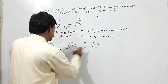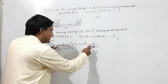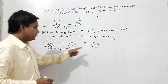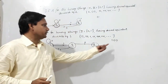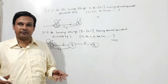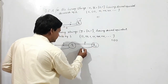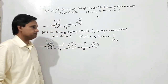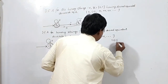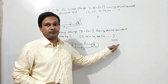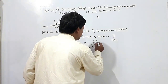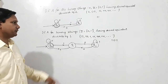Both transitions at 0 and 1 from Q1 are now shown. Now for Q2: arriving at Q2 via string '10'. For input 0, the string '100' has decimal equivalent 4. Dividing 4 by 3 gives remainder 1, so the transition goes from Q2 to Q1. For input 1, the string '101' has decimal equivalent 5. Dividing 5 by 3 gives remainder 2, so the transition from Q2 on input 1 stays at Q2. This completes the DFA for binary strings whose decimal equivalent is divisible by 3.